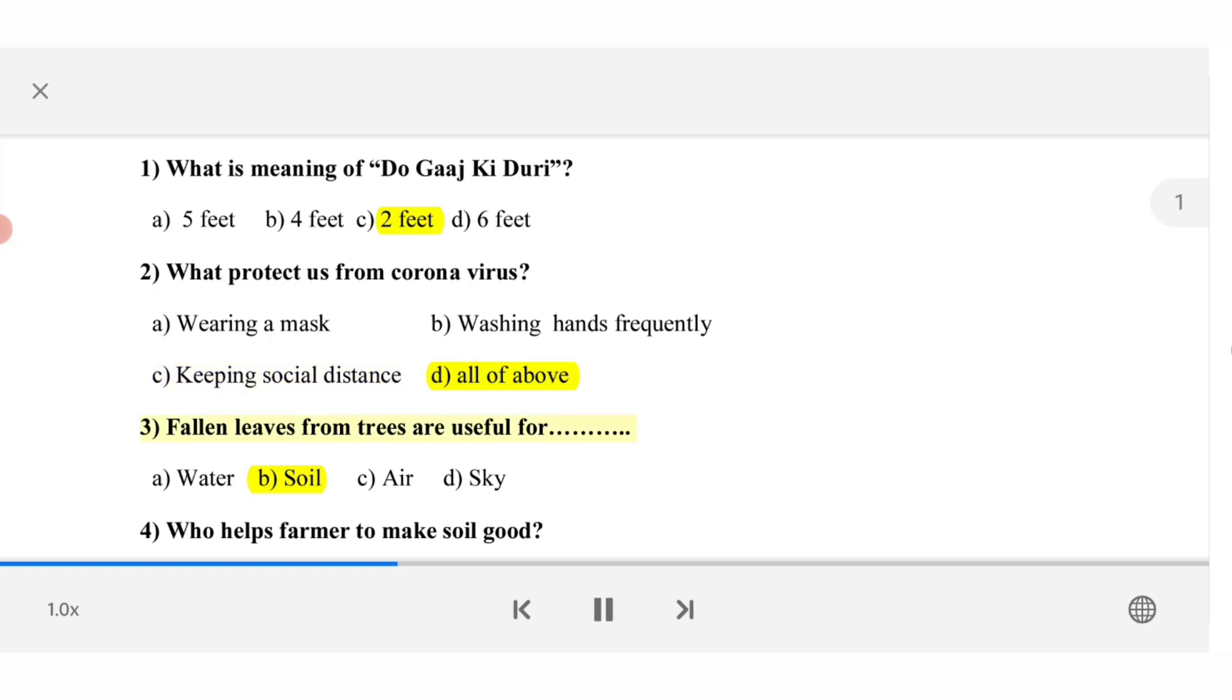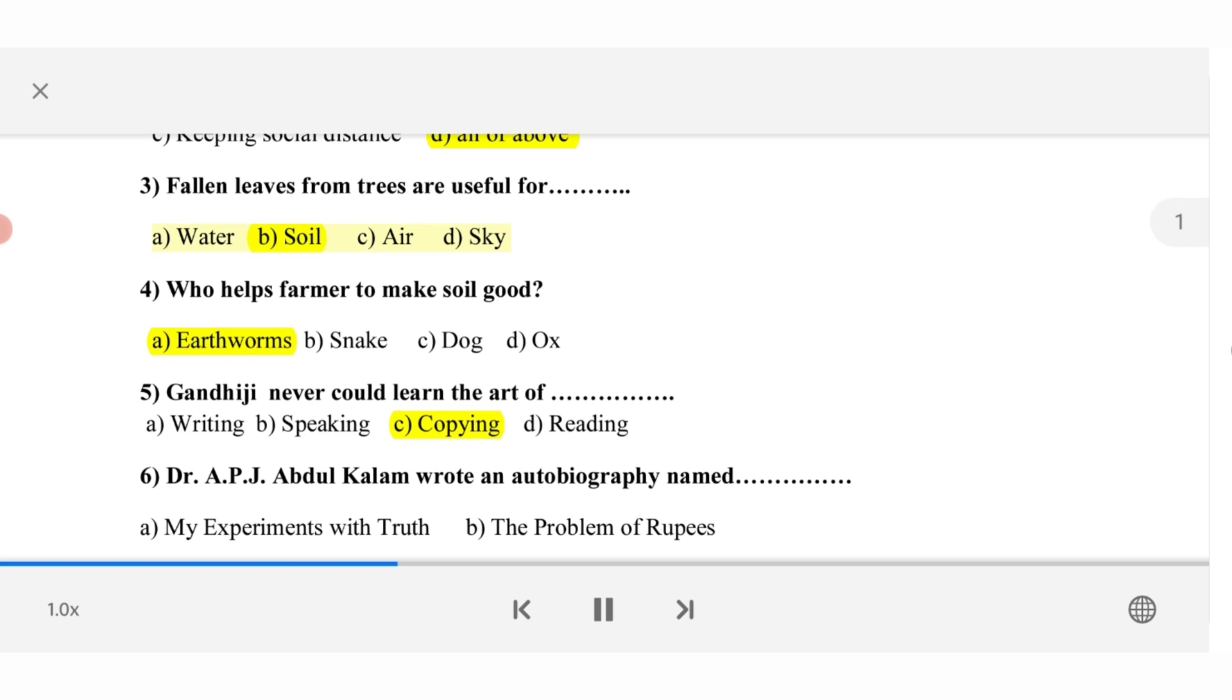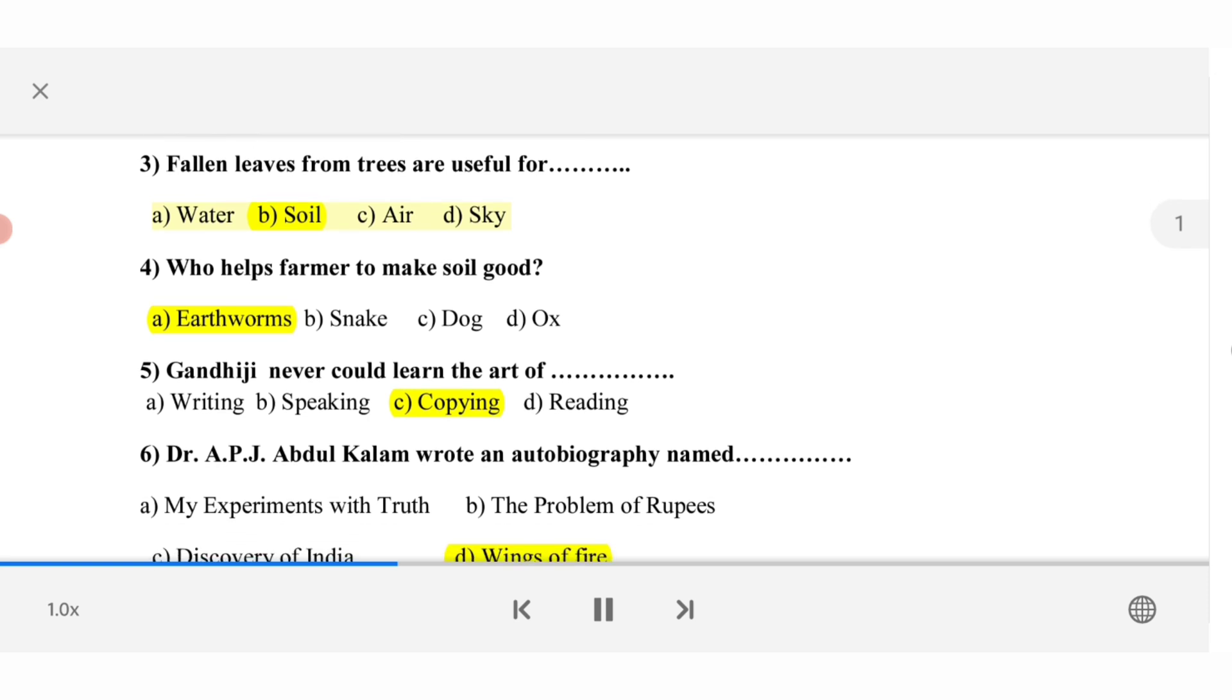3. Fallen leaves from trees are useful for. A. Water. B. Soil. C. Air. D. Sky. 4. Who helps farmer to make soil good? A. Earthworms. B. Snake. C. Dog. D. Ox.